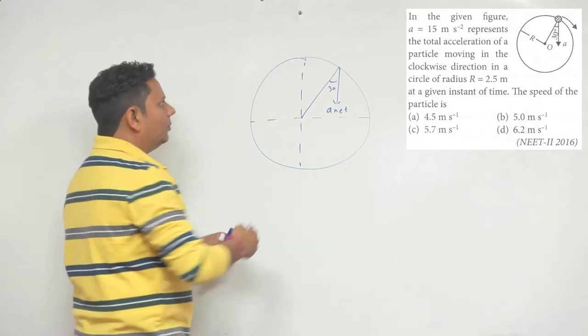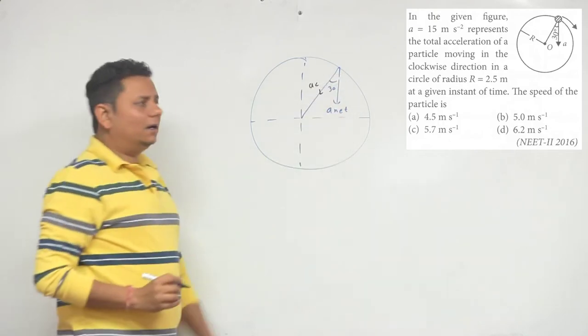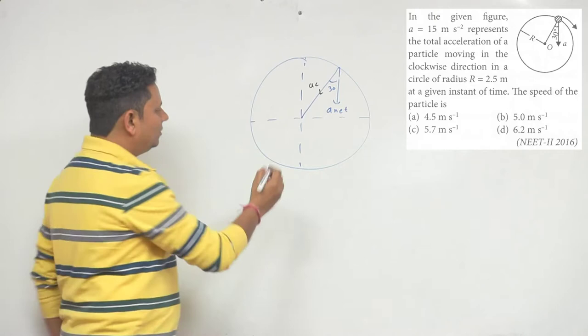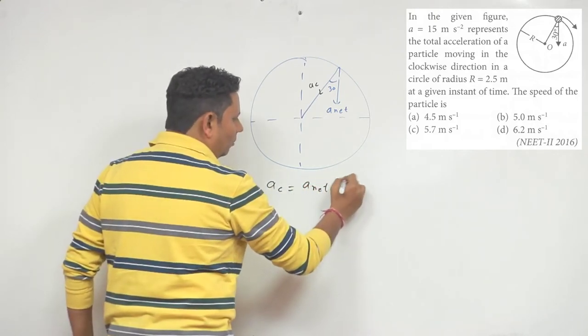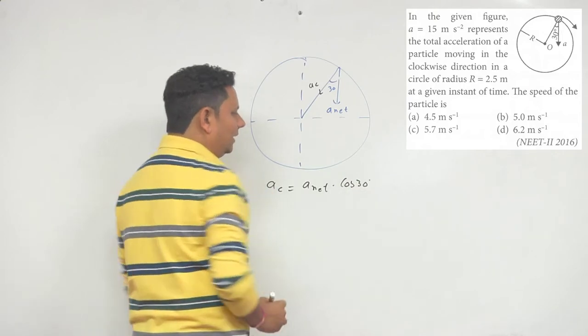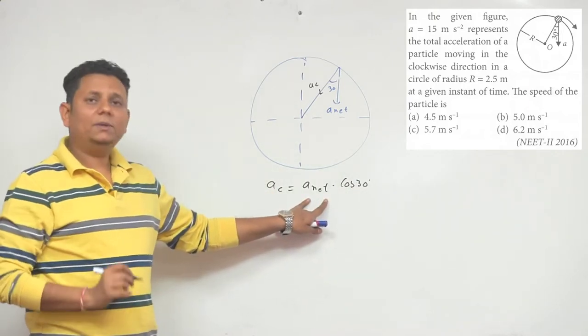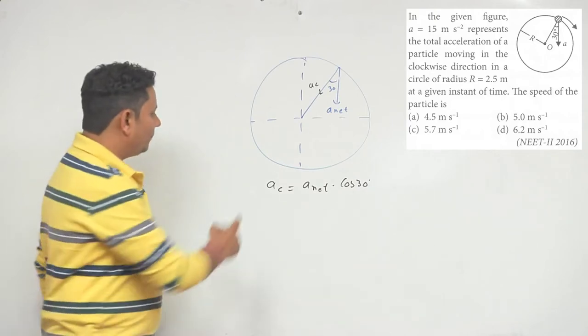If we take this A net component in the centripetal direction toward the center, it will represent centripetal acceleration. Based on this, we can say that A_C will be equal to A net multiplied by cos of 30 degrees. A net value is 15 meter per second square, cos of 30 degrees is root 3 by 2.